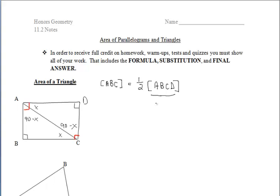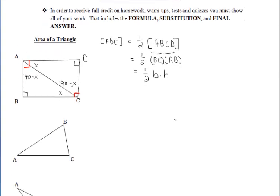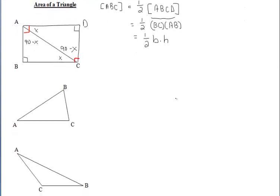We know how to find the area of that rectangle because we talked about that in section 11.1. To find the area of this rectangle, we would do BC times AB, which is base times height. But since the area of the right triangle is half the area of the rectangle, to find the area of our right triangle, we do one half base times height.